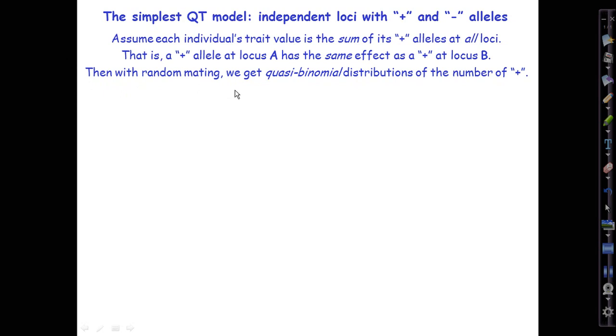With random mating, we will then get a quasi-binomial distribution of the number of pluses, the number of plus-making alleles. Also, of course, the binomial distribution of the number of minus-making alleles. And those will end up looking extremely normal as the number of loci increases.